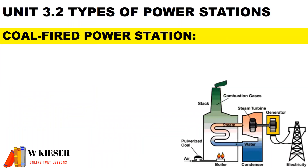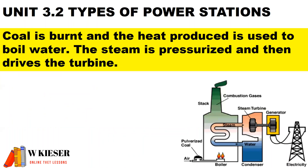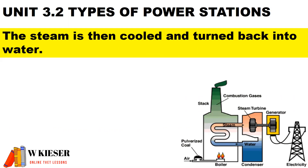The different types of power stations — we get the coal-fired power station. Coal is burnt and the heat produced is used to boil water. The steam is pressurized and then drives the turbine. The steam is then cooled and turned back into water.